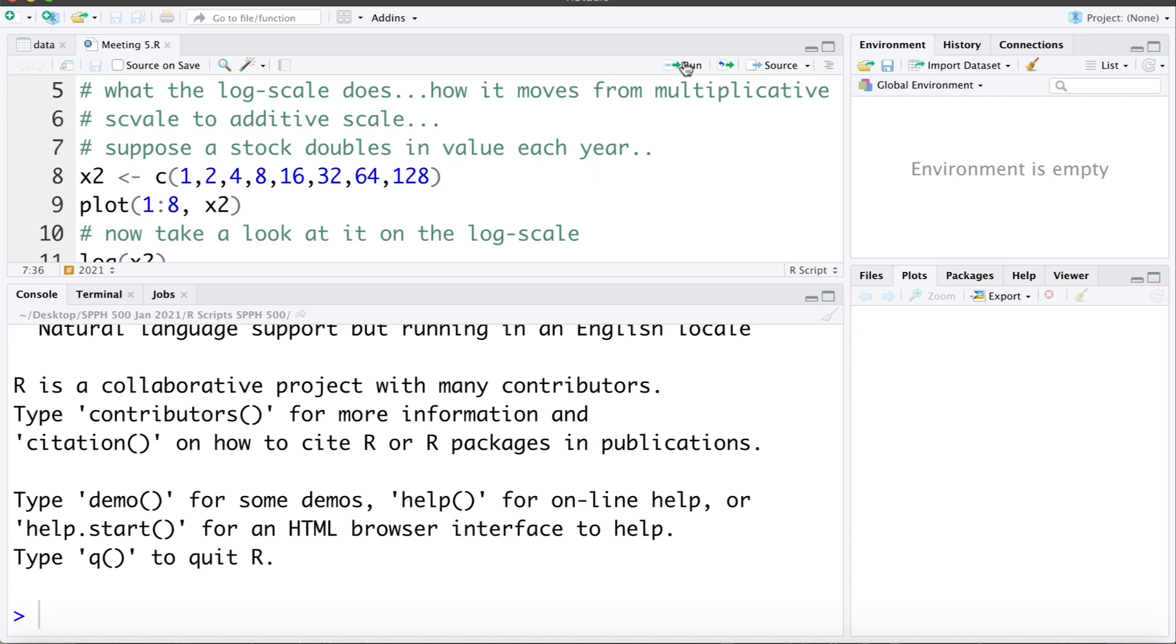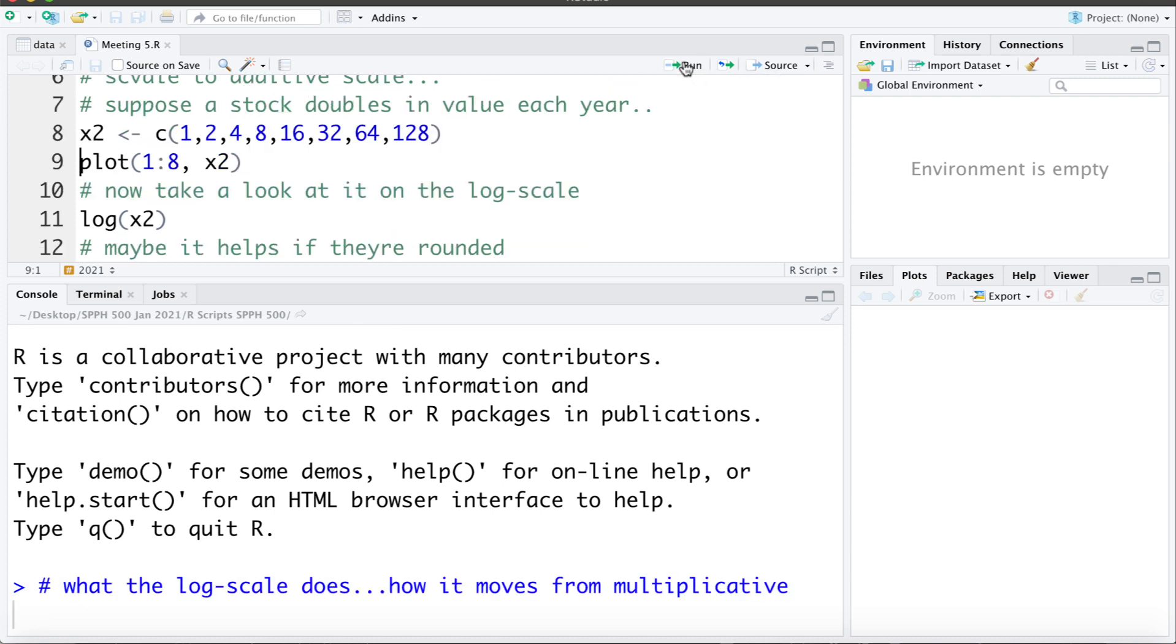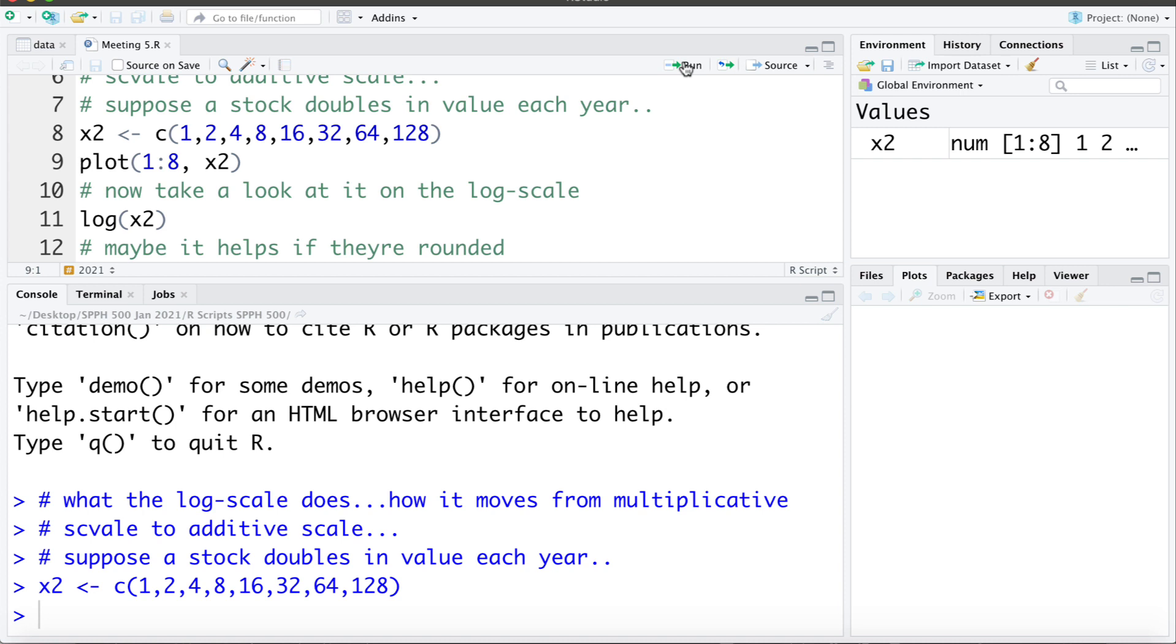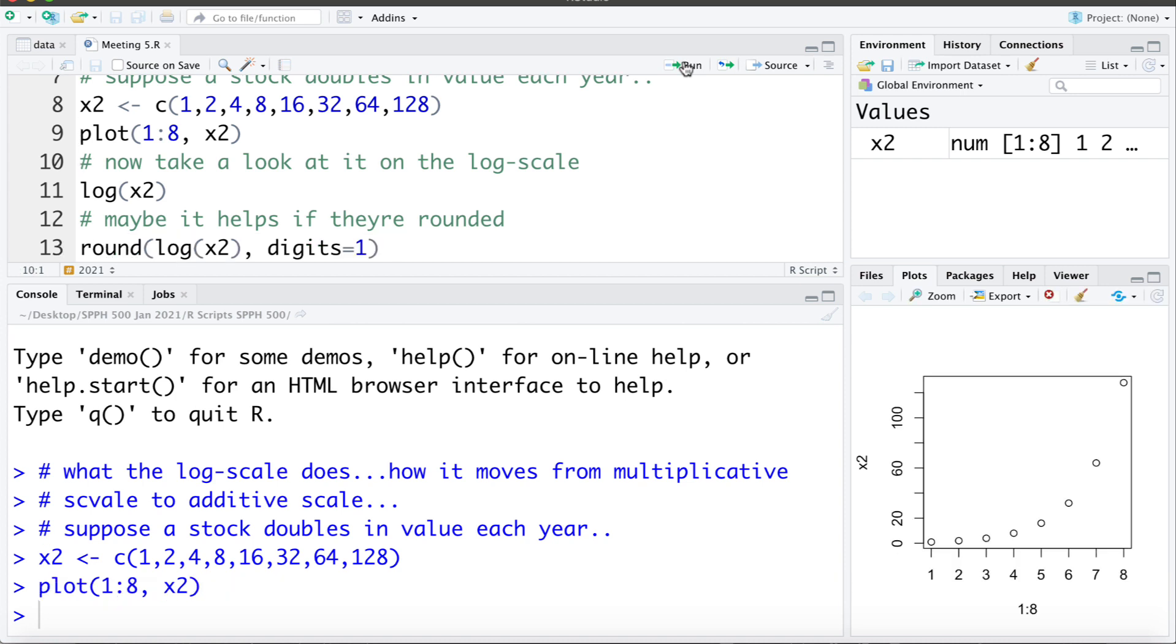So let's create that variable x2 which shows a doubling each year and I'm going to plot that versus year 1, year 2, all the way up to year 8. And looking at this plot we can see this exponential or multiplicative growth.